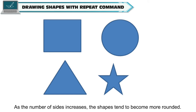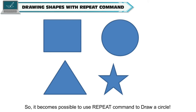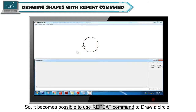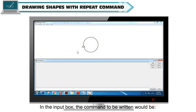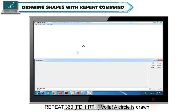As the number of sides increases, the shapes tend to become more rounded. So it becomes possible to use the repeat command to draw a circle. In the input box, type: REPEAT 360 [FD 1 RT 1]. Voila! A circle is drawn.